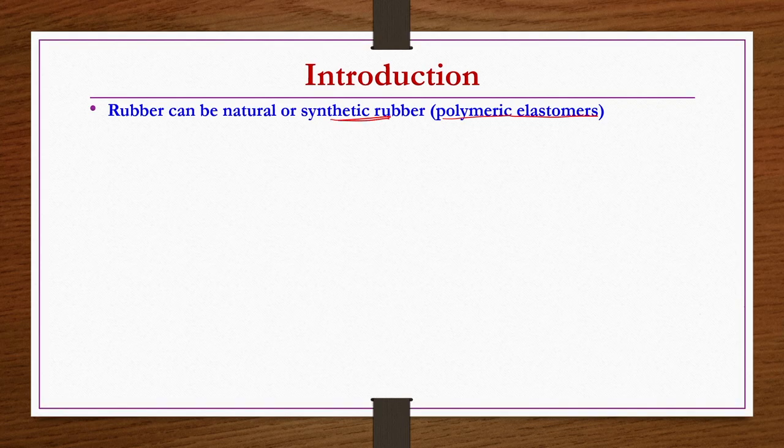Most of the Indian rubber requirements are fulfilled by natural rubbers only — almost 65 to 70 percent. The natural rubber industry of India is indigenous. However, some requirements are also fulfilled by synthetic rubbers, which we are going to discuss in this lecture and the coming lectures of this chapter.